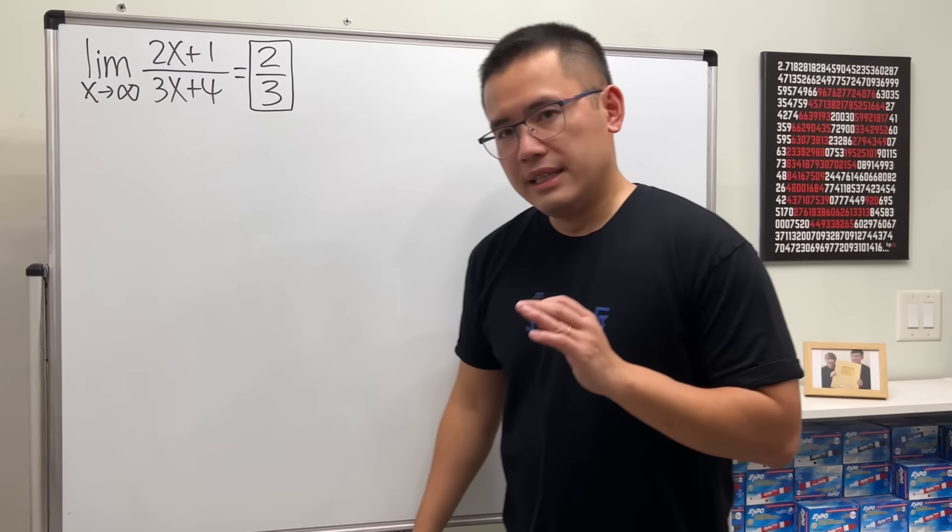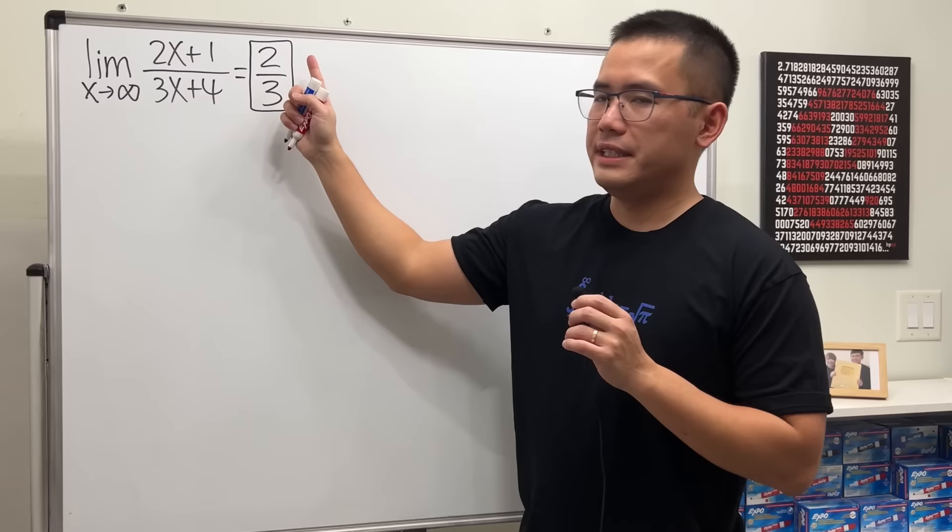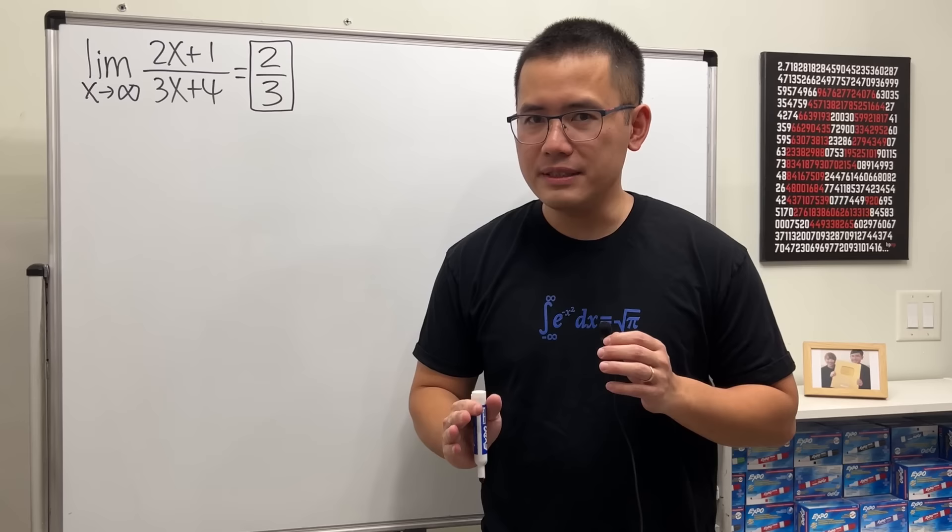Today I'm going to help you understand how to prove the limit as x approaching infinity of (2x+1)/(3x+4) is equal to 2/3. We are talking about proving a limit rigorously, and this time we will actually be using the epsilon-N definition, because x is approaching infinity.